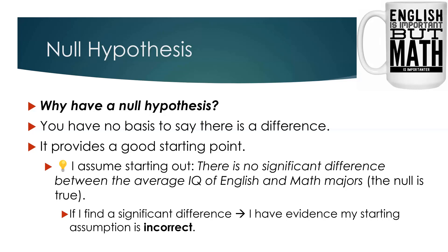If I assume starting out that there is no significant difference between the average IQ of math and English majors, I'm assuming the null is true. If I find a significant difference, that could be potential evidence that my starting assumption is incorrect. If I assume all things being equal there's no difference, I would expect to find no difference when I gather data. But if I do find a difference, maybe that's evidence my starting assumption was false and I should get rid of it — and assume something else, such as the alternative hypothesis. We have a better basis to say there is no relationship than to say there is, which is the logic behind having a null hypothesis.